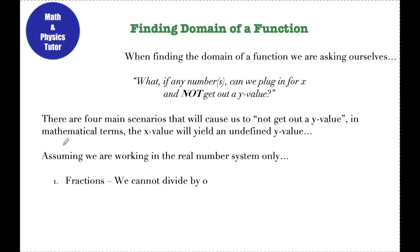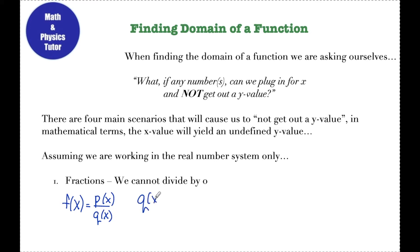The first scenario we're going to look at are fractions. If I have a function f of x that's defined as a quotient of polynomials — say p of x over q of x — since I can't divide by zero, I have to make sure that q of x, the denominator, does not equal zero. So if I have a fraction, I'm going to take the denominator, set it equal to zero, solve for those x values, and exclude those values from my domain.